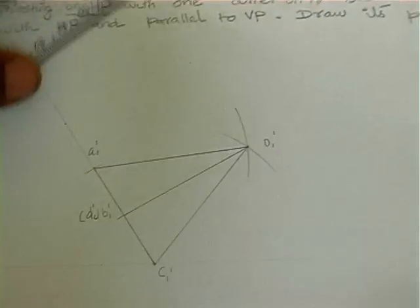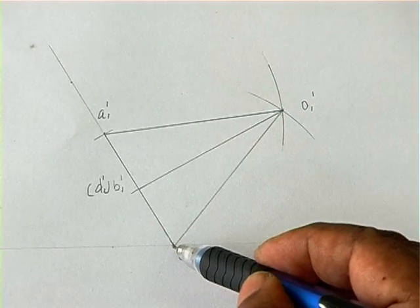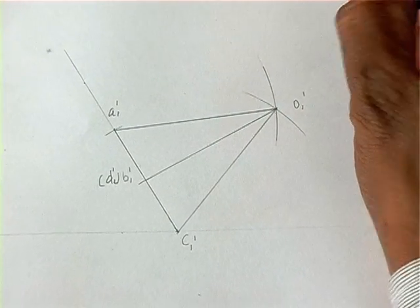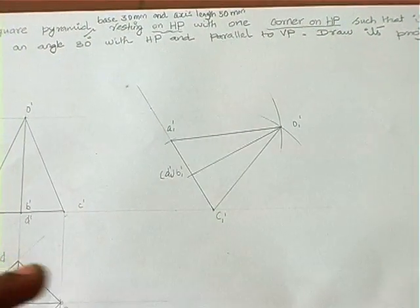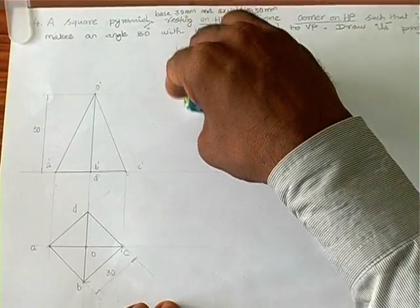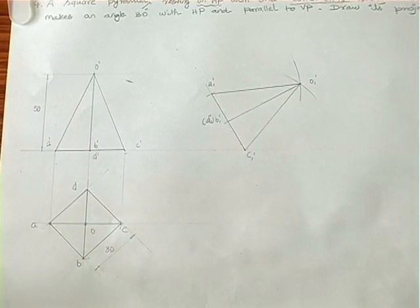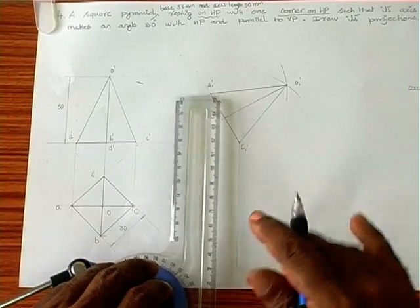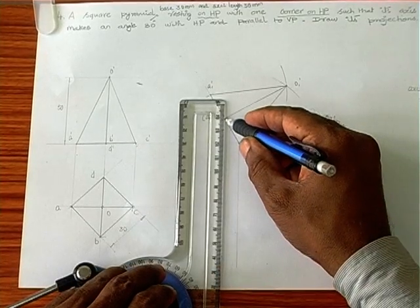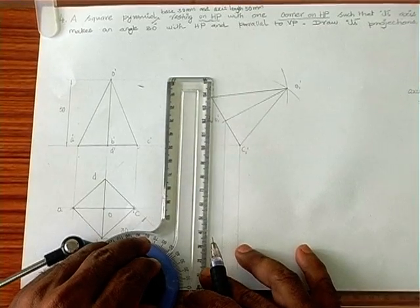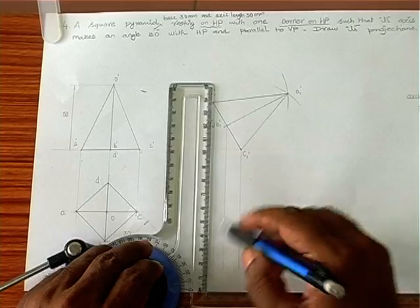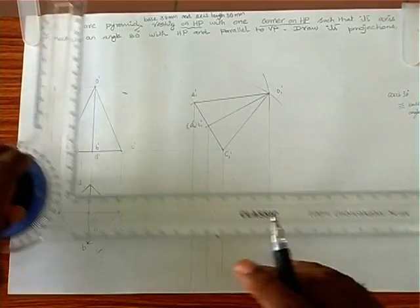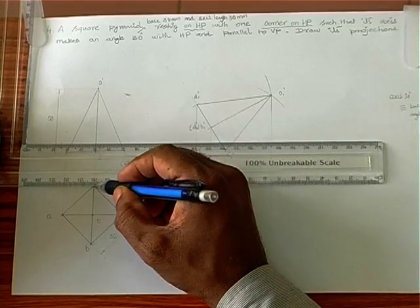In the new position, we again have only one point on the XY line, confirming only one corner is kept on HP. Now we project this to get the final top view — this is the final front view. We project through C, through B and D, and through A, and through vertex O, drawing vertical projection lines.